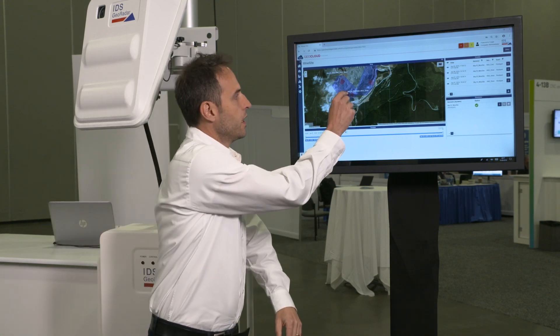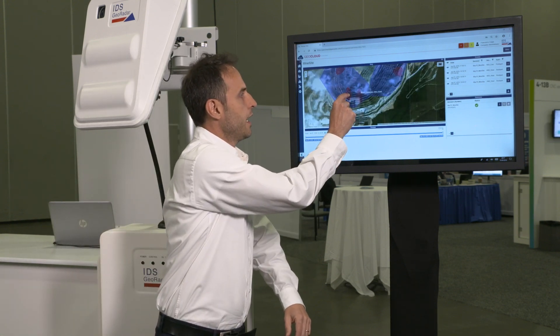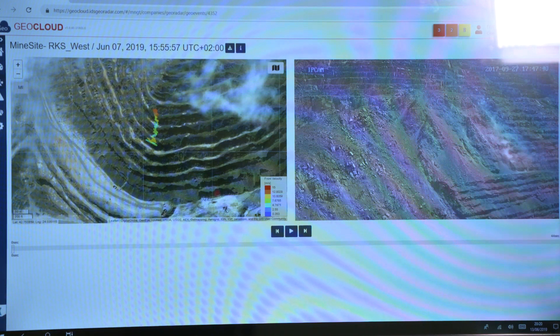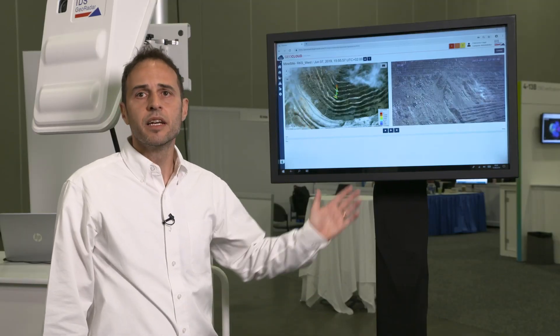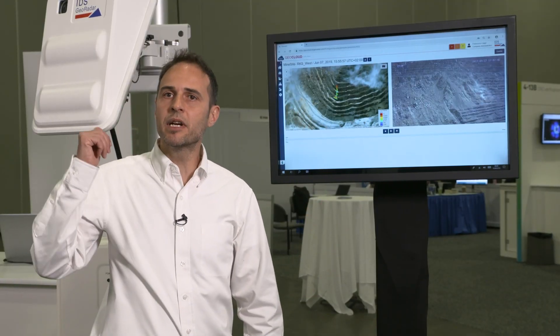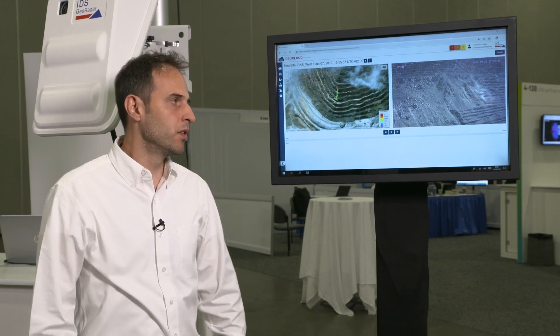And simply clicking on the events, you can have detailed information about the event. You can see side-by-side the trajectory of the rockfall in this case and the video recorded by the camera embedded in the Rockspot unit.